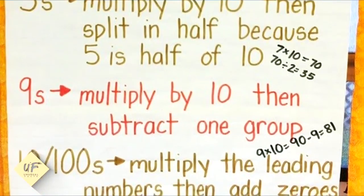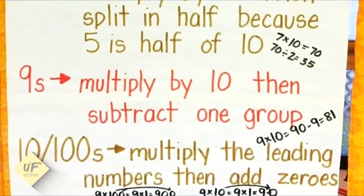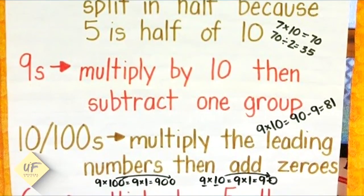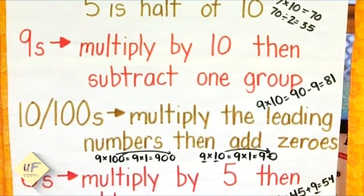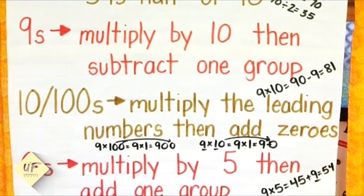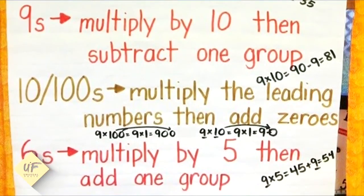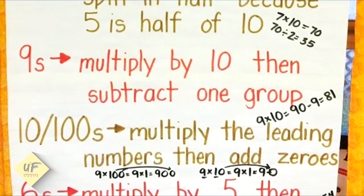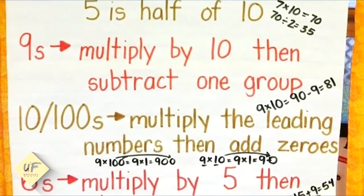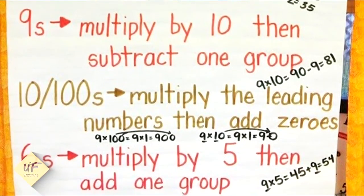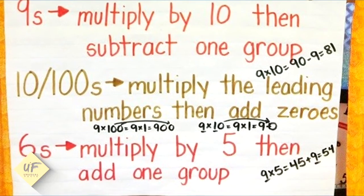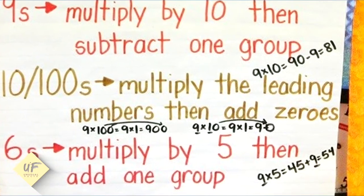Fives: multiply by ten, then split in half, because five is half of ten. So seven times ten equals 70, divided by two, or 70 cut in half, is 35. Nines: multiply by ten, then subtract one group. Nine times ten equals 90 minus nine equals 81.